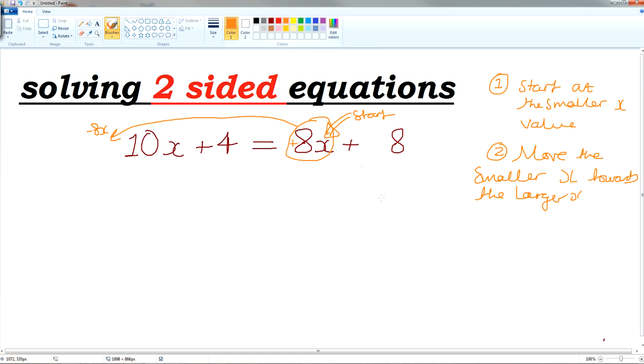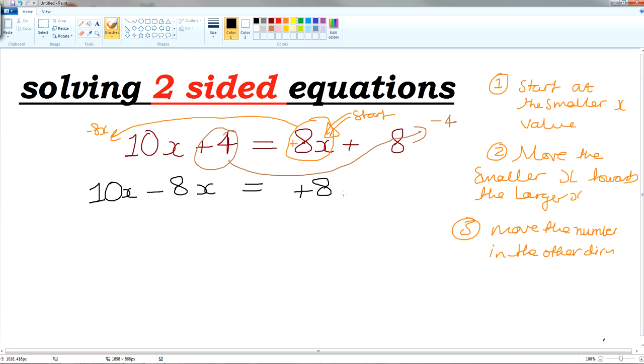Now once we move the x to one side, we have to move the numbers in the other direction. Now I've moved the x from the right to the left. So I've got to move the number on the left hand side to the right hand side. Opposite of plus 4 is minus 4. Now what is the purpose of this? What are we trying to do? We're trying to get something on one side and something on the other side. We're trying to get the x's on one side and the numbers on the other side.